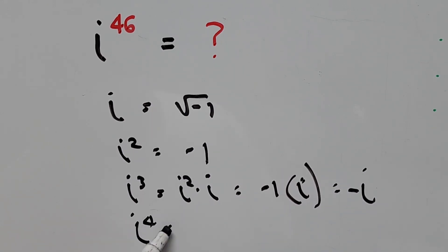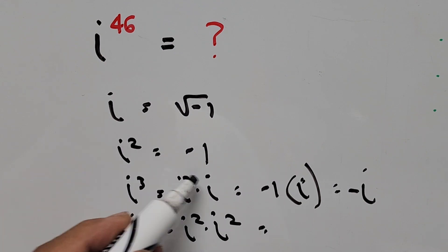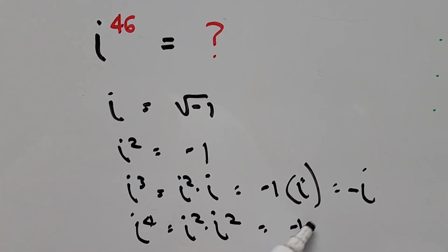And i to the fourth is i squared times i squared. This i squared is negative 1, so we have negative 1 times negative 1, that is equal to 1.